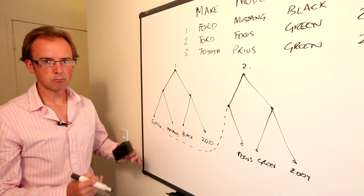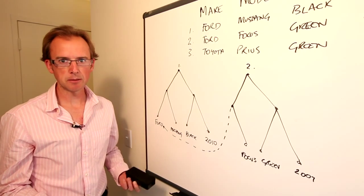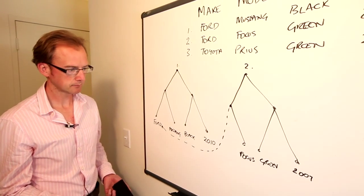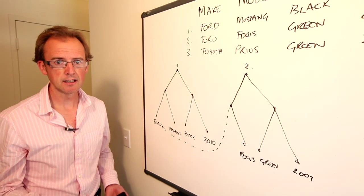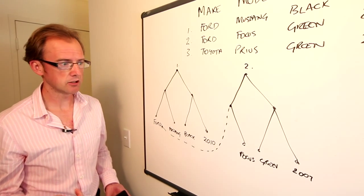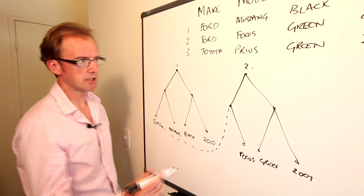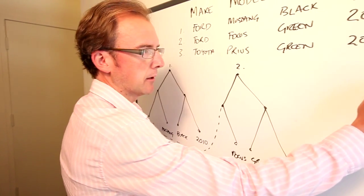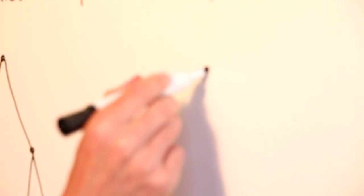Now at the moment, what we've done is similar to a columnar database, such as Vertica or Sybase IQ. Where things start to get really interesting is our second level of deduplication, what we call pattern level deduplication, which is illustrated by when we bring our third record into the mix.